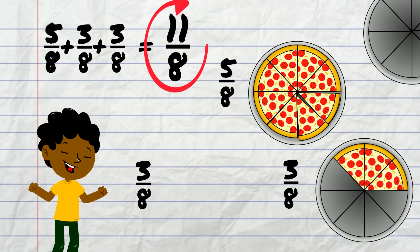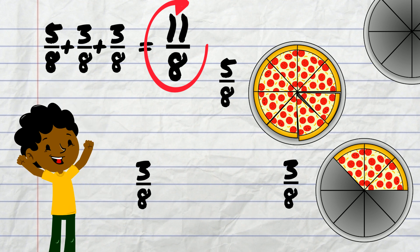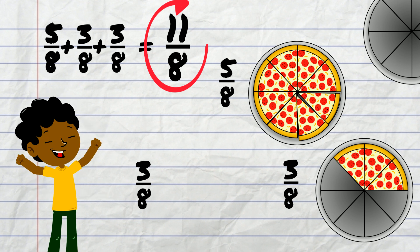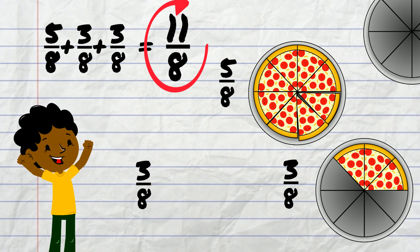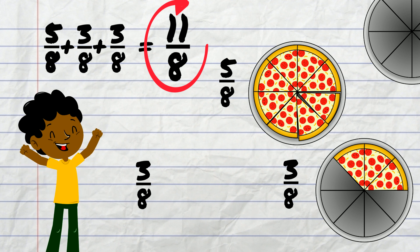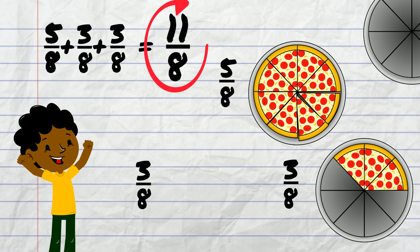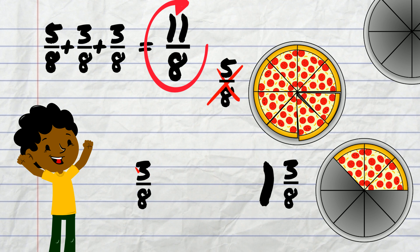He took another look at his drawing. Sure enough, he could take 3 pieces from one pizza and add them to the other pizza to make a whole. Now he had 1 whole and 3 eighths.